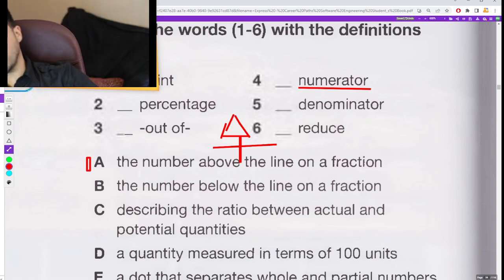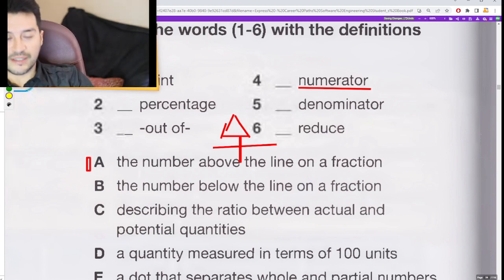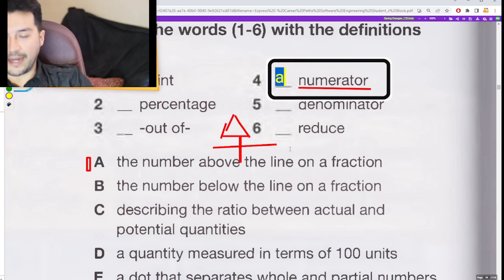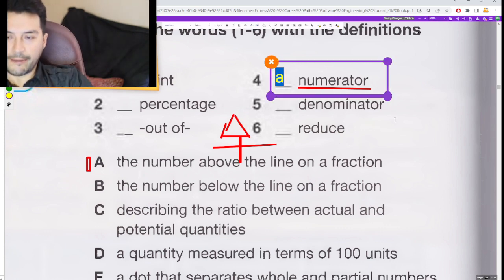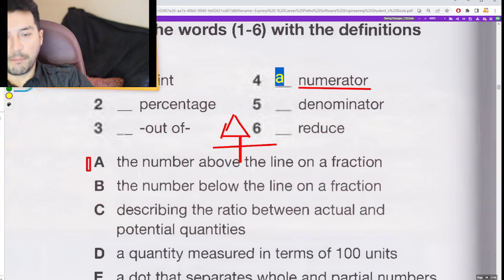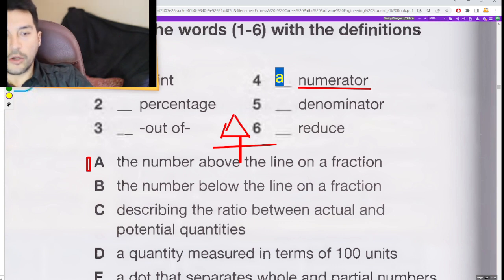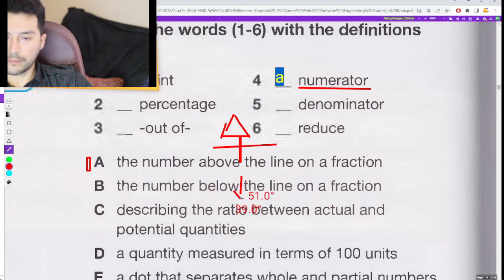Levanten la mano si batallaban con este vocabulario en la clase de matemáticas en la primaria. The numerator es el de arriba, the number above the line. Y el de abajo: below. Below, otra preposición, down, down, down.